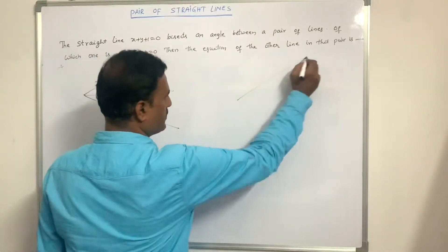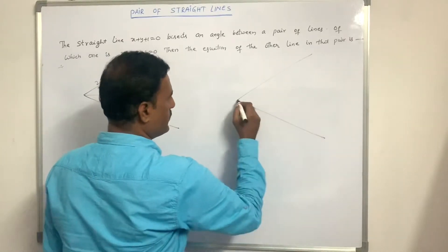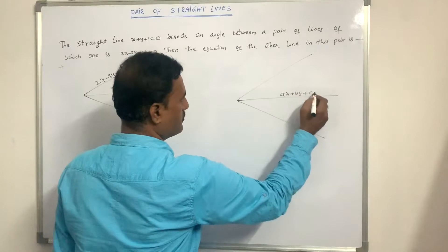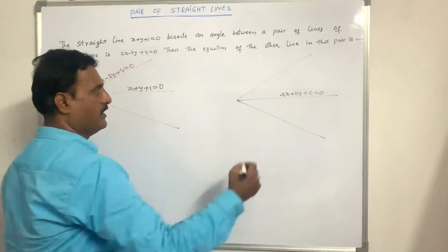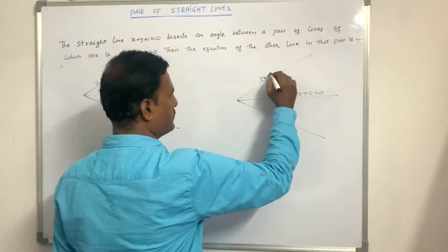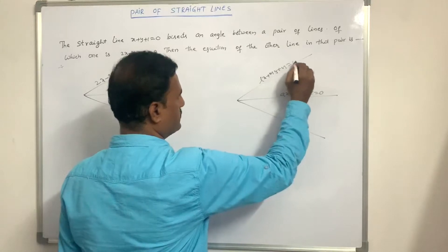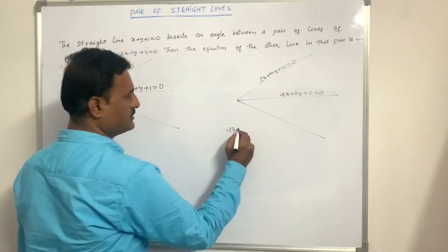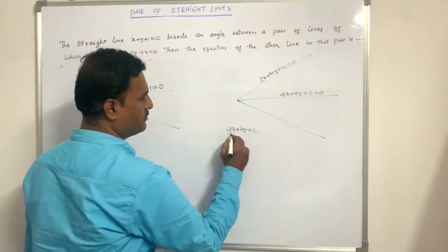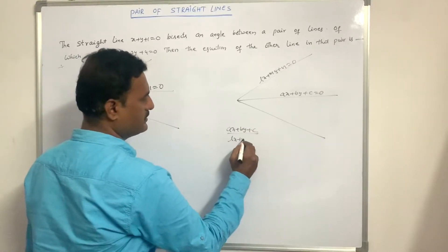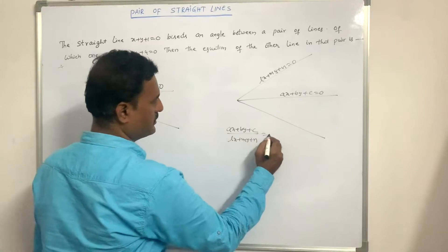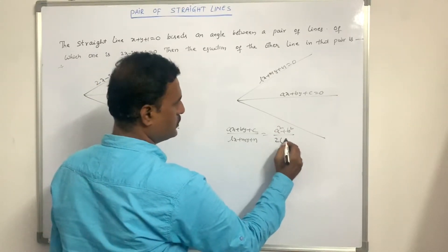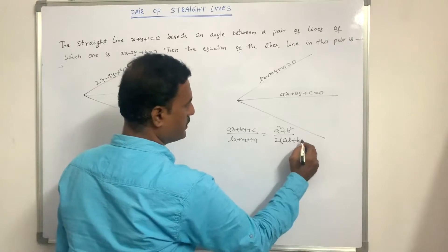Here, this is the pair of lines. The formula: if the line ax + by + c = 0 bisects the pair of lines and one of the lines is lx + my + n = 0, then the equation of the other line is: (ax + by + c)/(lx + my + n) = (a² + b²) / (2(al + bm)).